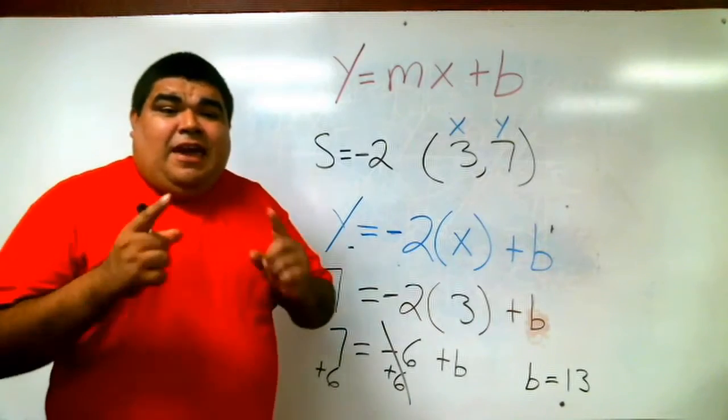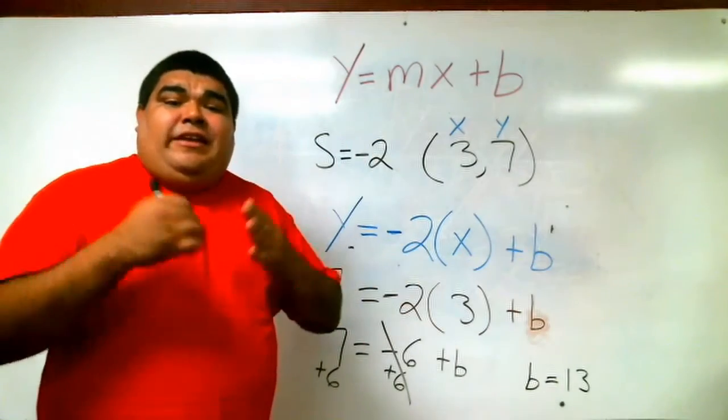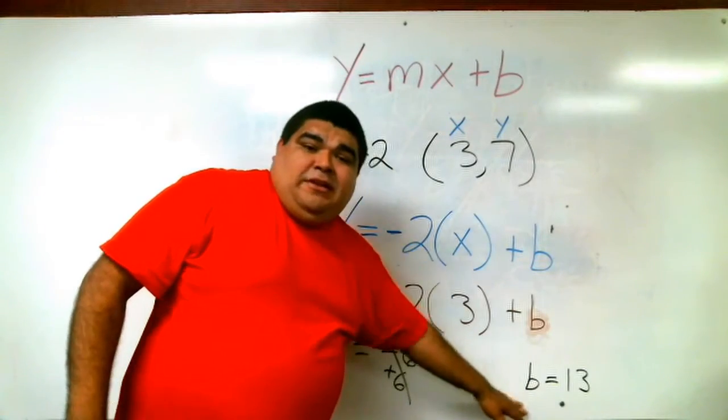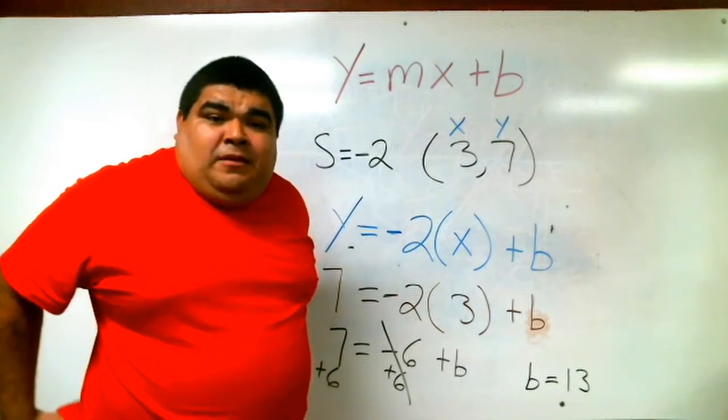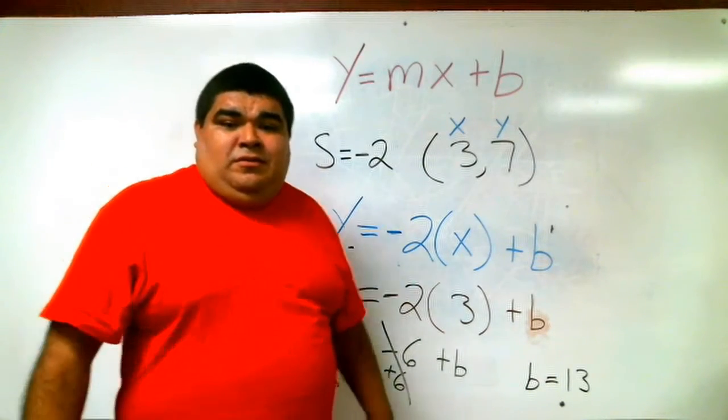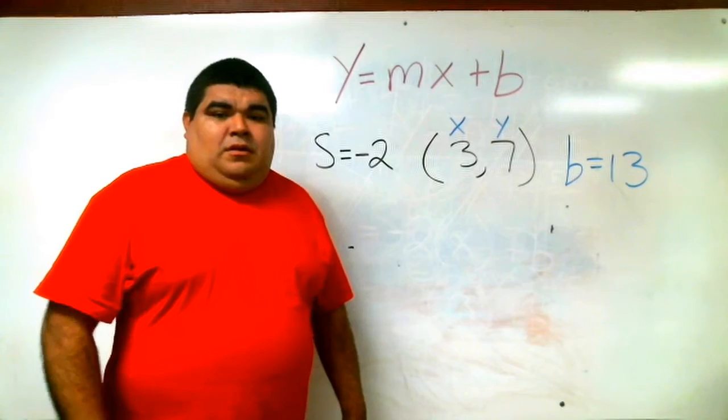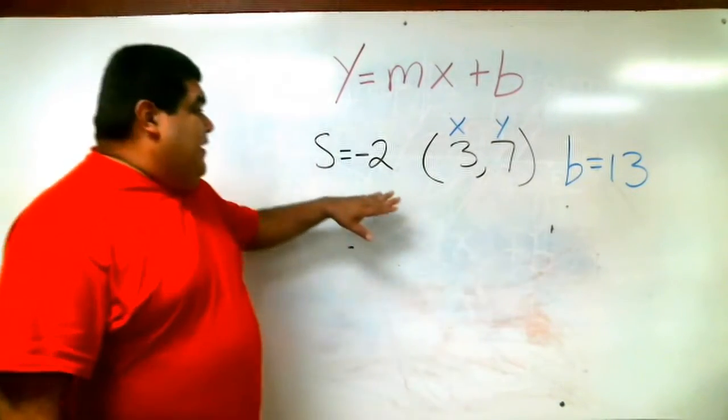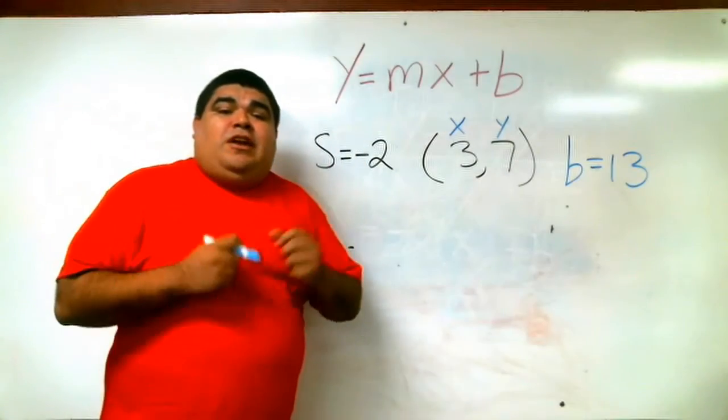Now that we have that, we can actually create our equation, because we have the slope and we have our b. So now let's combine everything together to make that new equation. All right, guys. We already solved for b. S was already given to us, the slope. So now we're going to put it all together.